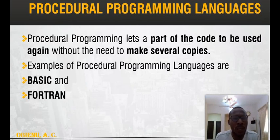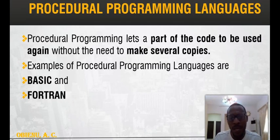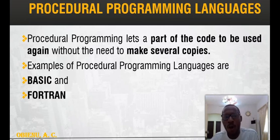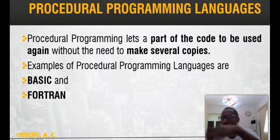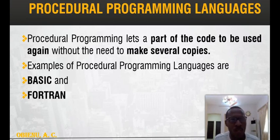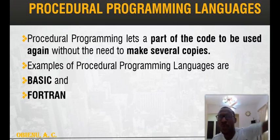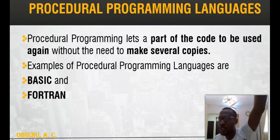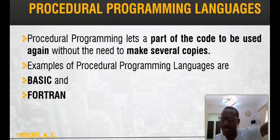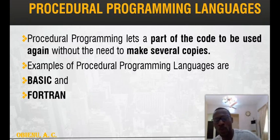A code segment is what is used to achieve a goal. One important feature of procedural programming languages is that they allow you to reuse a code segment without having to rewrite it. For example, if you have a segment to add two numbers at the beginning, and later you need to add two numbers again in the middle of the program, you don't need to rewrite that addition code — you can transfer the procedure to that portion where the addition module is, then continue the operation.